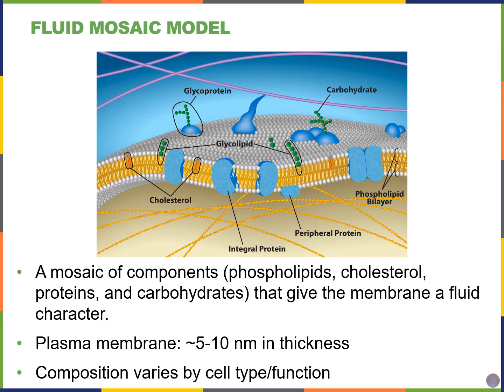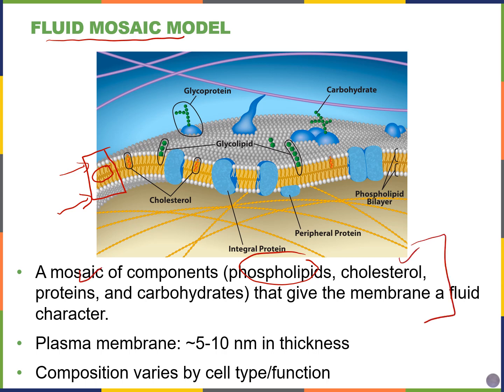Although we previously described the membrane as being primarily composed of phospholipids in a phospholipid bilayer, where the nonpolar tails face inwards and the polar heads face the outside and inside of the cell, we often also call the plasma membrane a fluid mosaic model because there are so many other components that make up the cell membrane, including cholesterol, proteins, and carbohydrates.